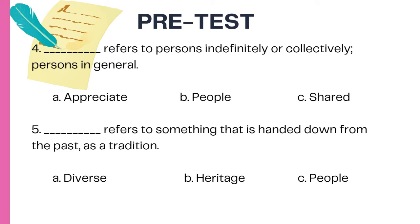Number four refers to persons indefinitely or collectively; persons in general. Number five refers to something that is handed down from the past as a tradition. A. Diverse. B. Heritage. C. People.